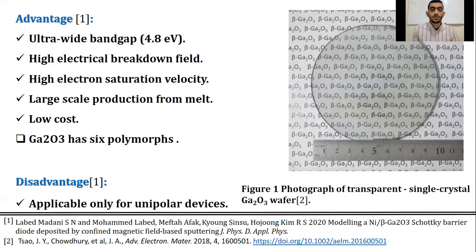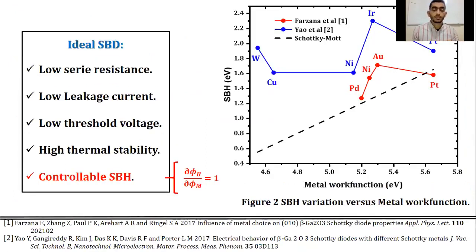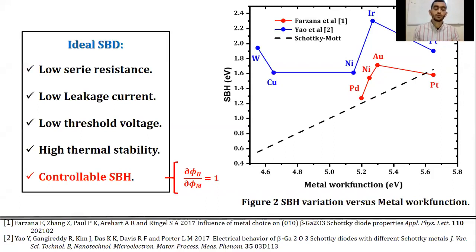In recent years, the number of gallium oxide Schottky barrier diode related academic publications has substantially increased, and researchers aimed from these publications to develop a high-performance Schottky barrier diode with, for example, low series resistance to minimize heating during operation, low leakage current, high thermal stability, and controllable Schottky barrier height. According to Schottky-Mott rule, there is a linear dependence between Schottky barrier height and metal work function.